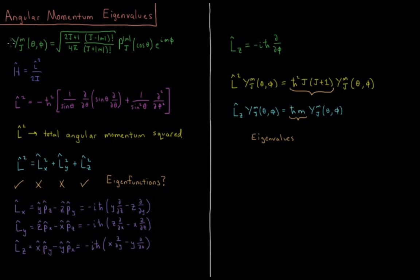So our rigid rotor wave functions are the spherical harmonic functions, y, j, m of theta phi, j and m being quantum numbers, where j starts at 0 and goes up to infinity, taking on integer values: 0, 1, 2, 3, etc.